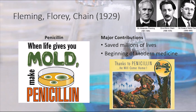Next: Fleming, Florey, and Chain. Alexander Fleming was a Scottish biologist who published extensively in several fields, including bacteriology, immunology, and chemotherapy. He is most well known for the discovery of the first antibiotic, penicillin, but interestingly enough, he had little to do with actually getting the substance mass-produced for human use. Penicillin was discovered by Alexander Fleming, but it wasn't until Howard Florey and Ernst Chain came across Fleming's research that the first antibiotic was mass-produced.